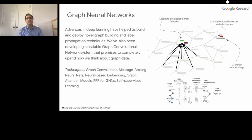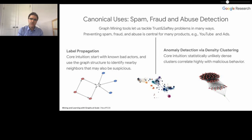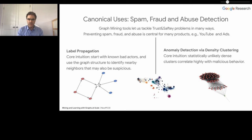Let me give you a number of canonical use cases at Google. We use these graph mining tools for spam, fraud, and abuse detection. There are two types of applications: label propagation and anomaly detection. For label propagation, we start from known bad actors, build a graph of relationships between actors, and then by looking at nearby neighbors and propagating information, identify other suspicious actors. For anomaly detection, we identify dense clusters — statistically unlikely dense clusters — that correlate with highly malicious behavior. These ideas have been used in YouTube, Ads, payment systems, and many other Google anti-abuse systems.